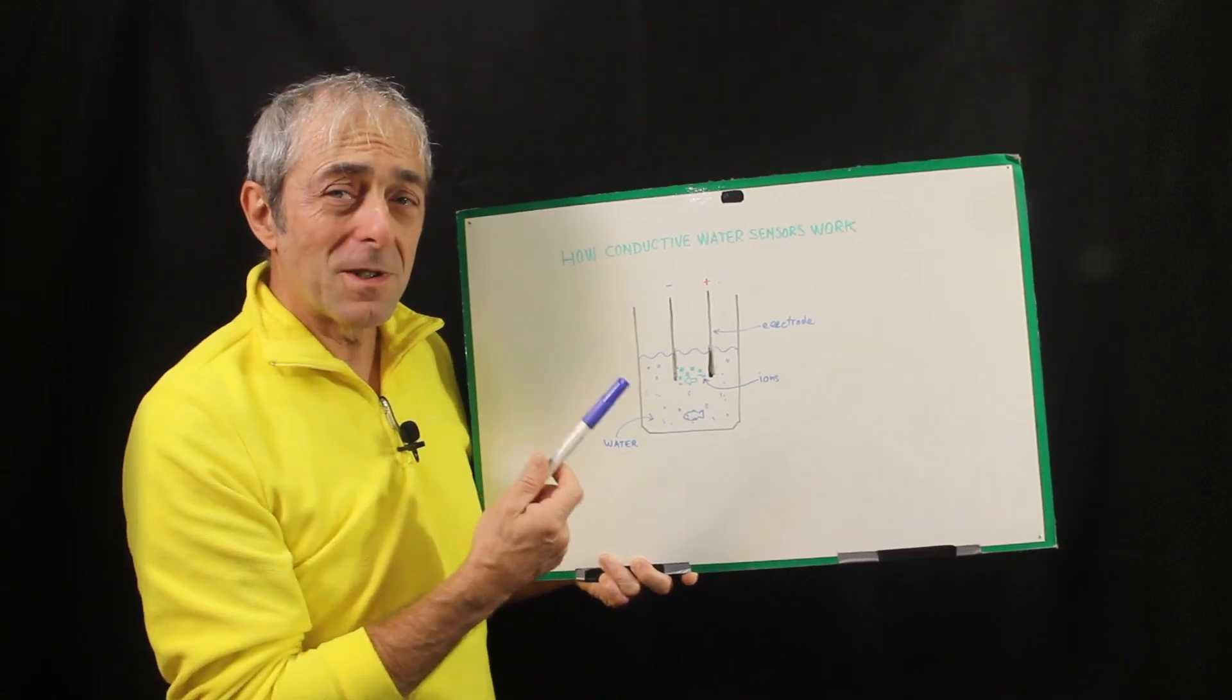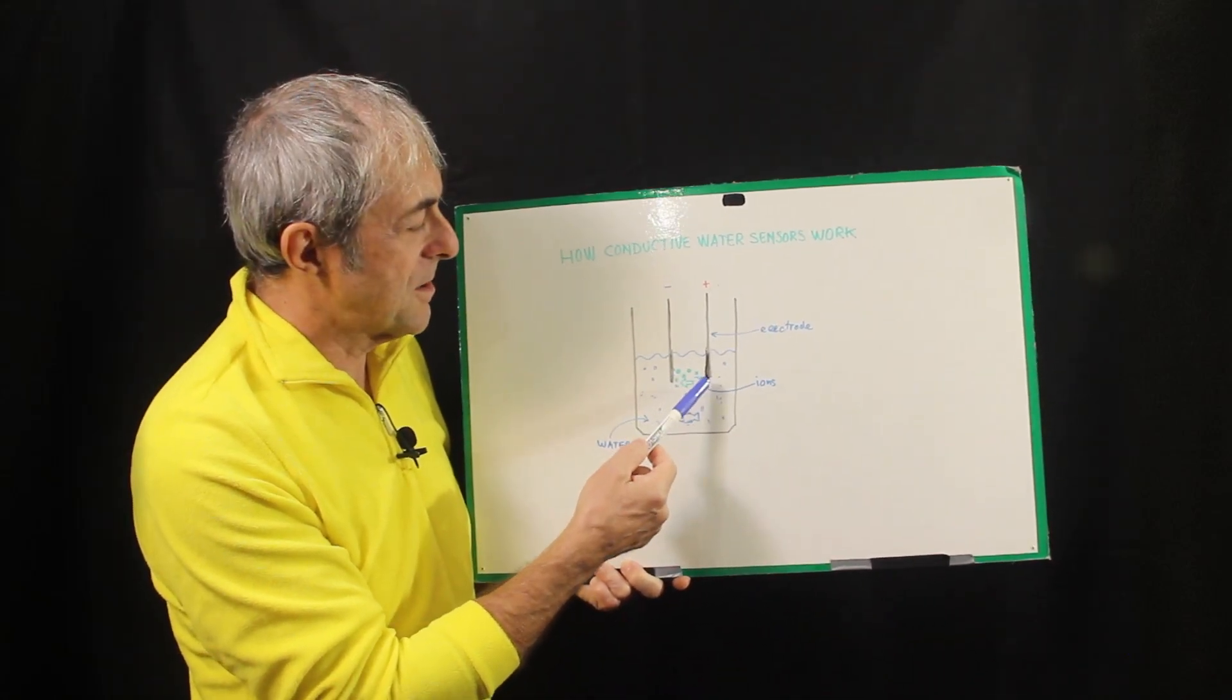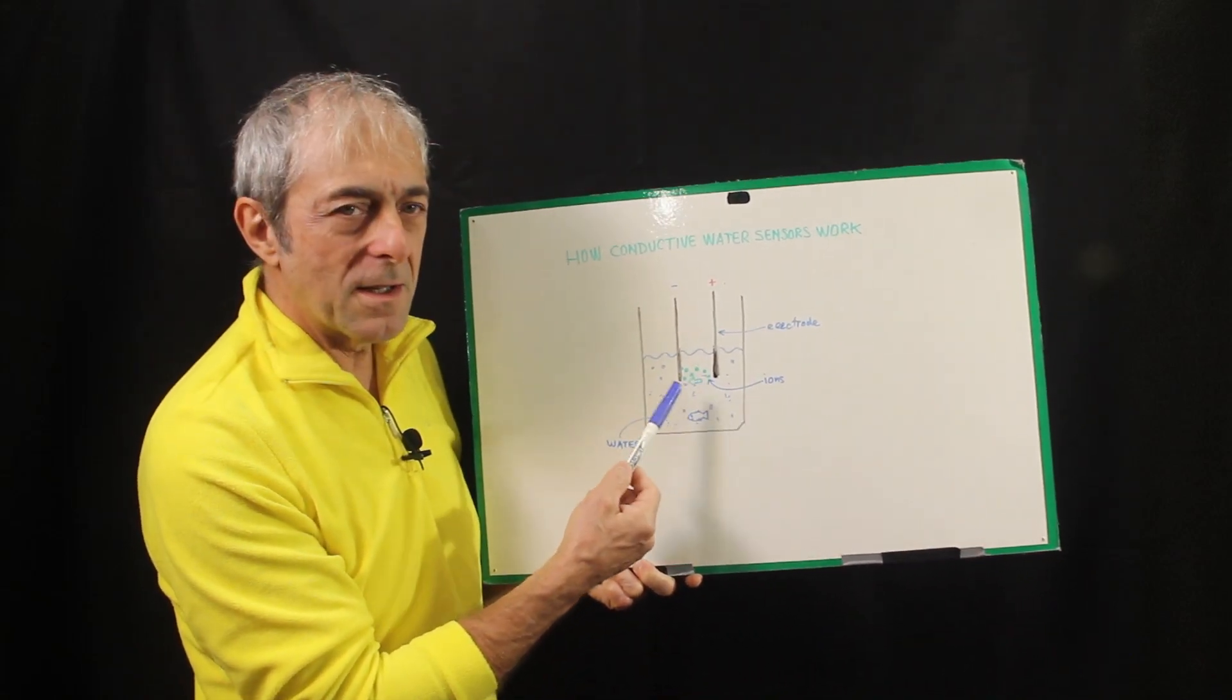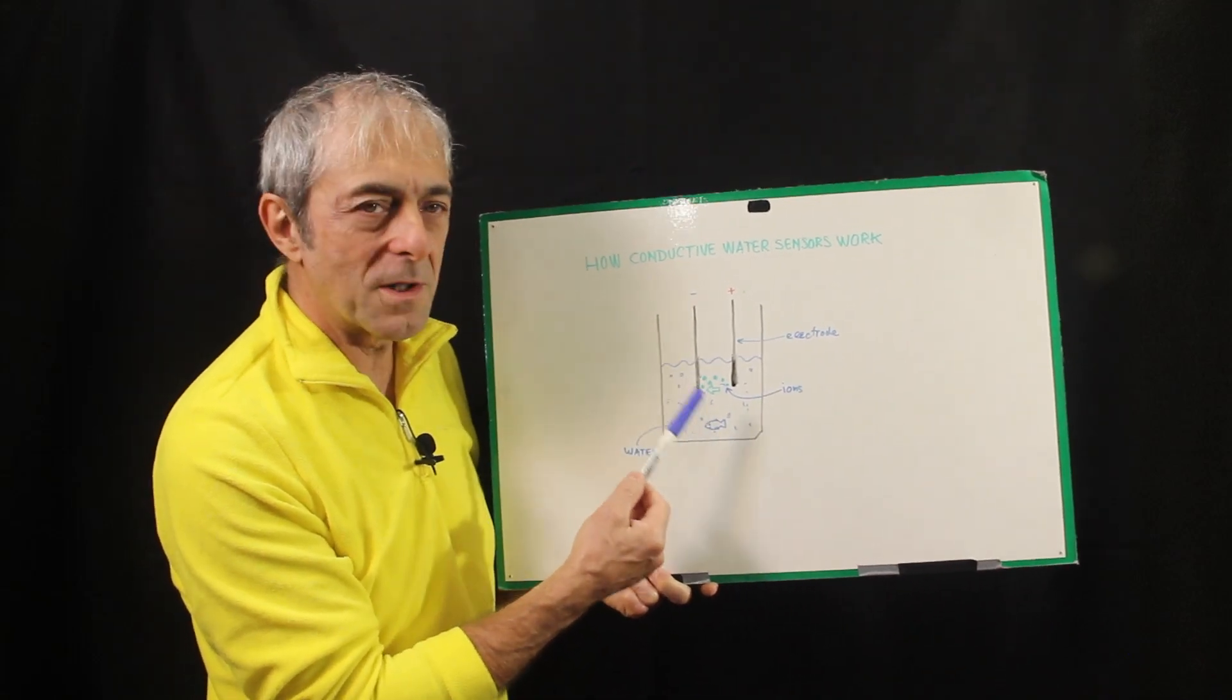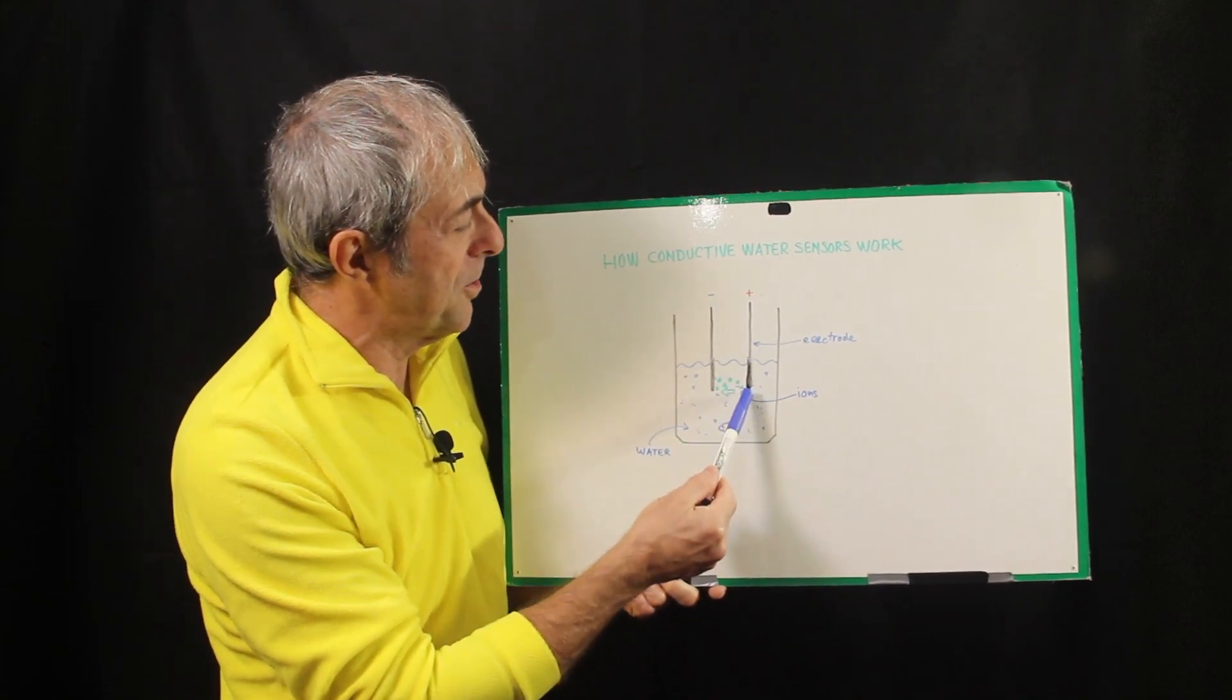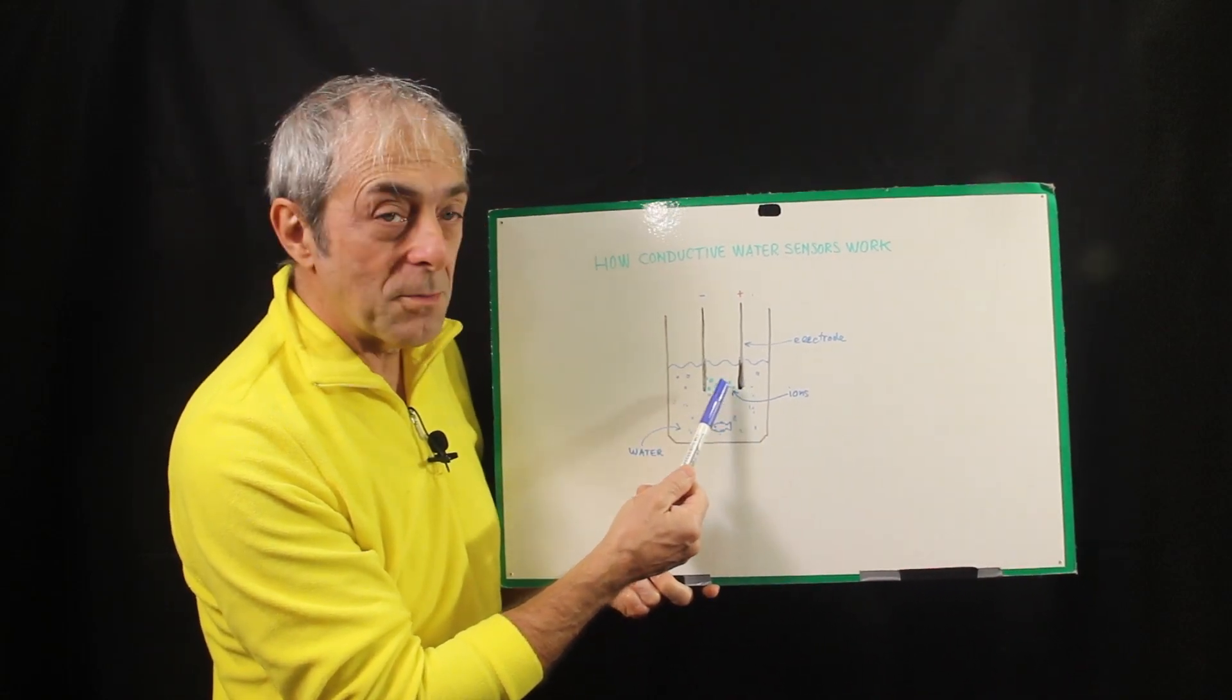But because water is not conductive, ions are. Pure water is not conductive. To make it conductive are ions that are dissolved into the water. And this is typically caused because there are salts dissolved into water. Even fresh water has salts dissolved in it. And so the current that flows through the medium is carried through ions that are actually atoms.